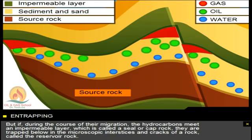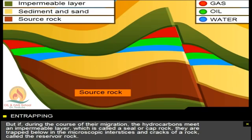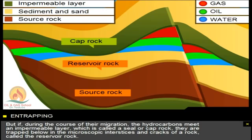But if during the course of their migration, the hydrocarbons meet an impermeable layer, which is called a seal or cap rock, they are trapped below in the microscopic interstices and cracks of a rock called the reservoir rock.